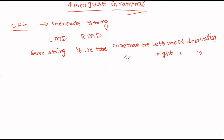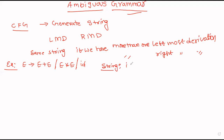That means if the grammar is ambiguous, it can have more than one leftmost derivation or more than one rightmost derivation. Consider an example. Suppose this is the grammar: E → E plus E | E into E | id. Assume the string is id plus id into id.